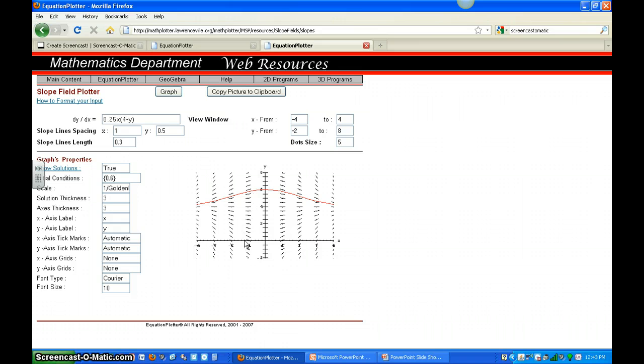And you'll see that there's a slope field every one unit for the x values, but every half unit for the y values. And I can adjust all these things. I can even adjust the font, the color. I will copy this image.